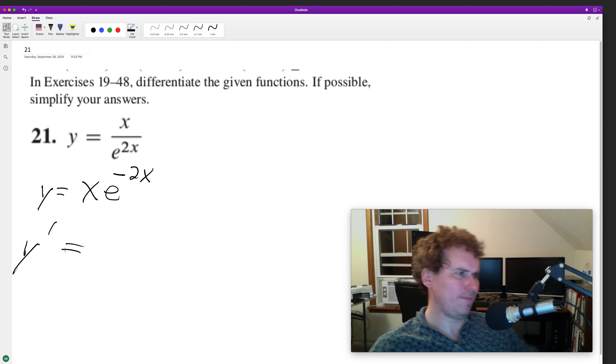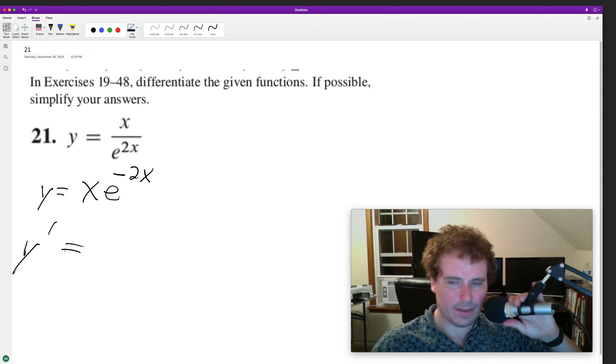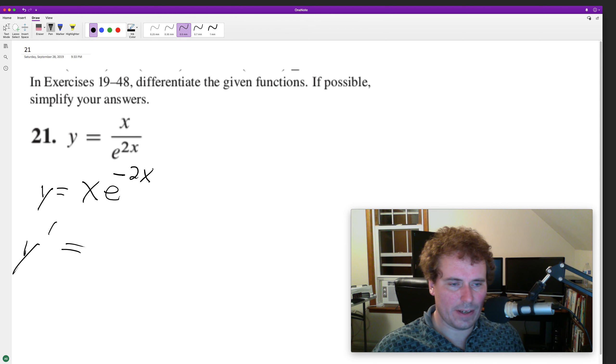So y prime is going to be equal to... the derivative of x is just 1 times e raised to the negative 2x, and then we're going to have plus x and then pull down the exponent.